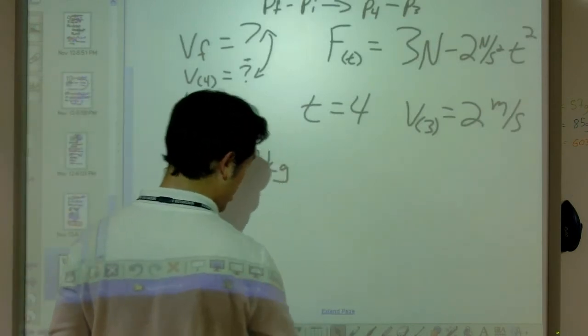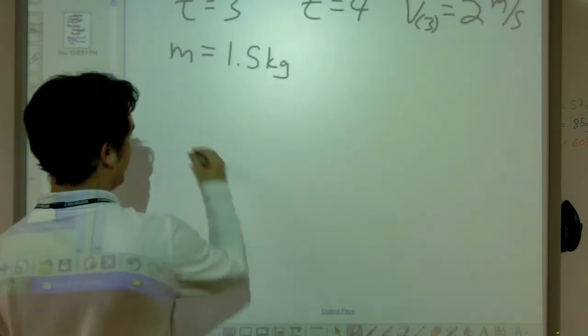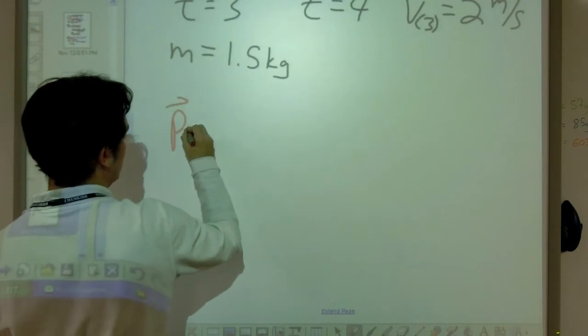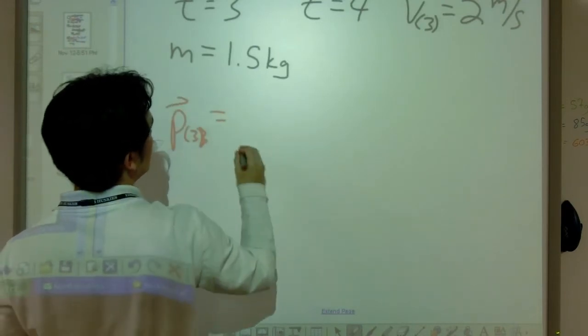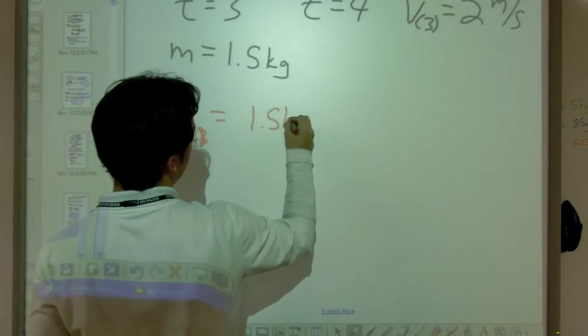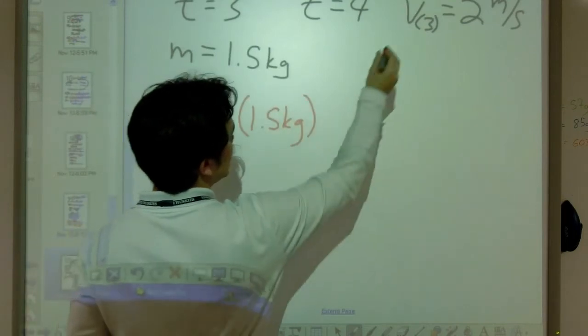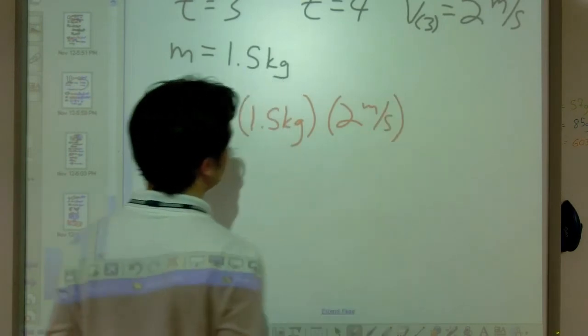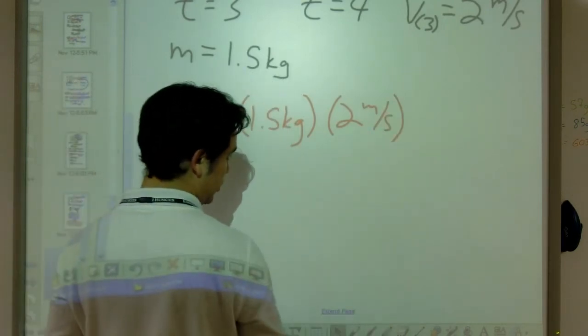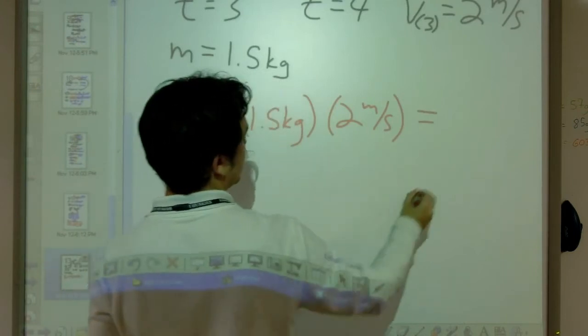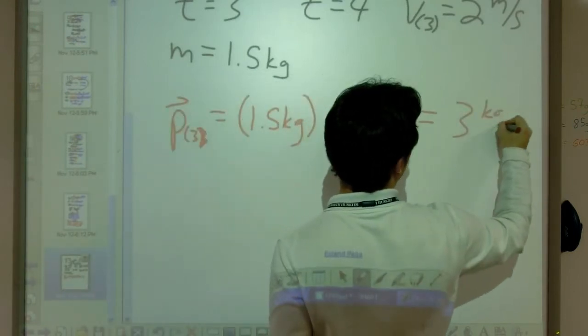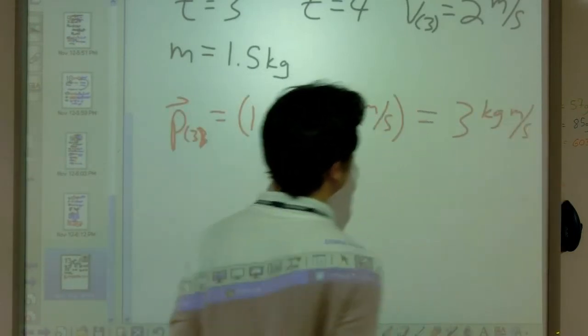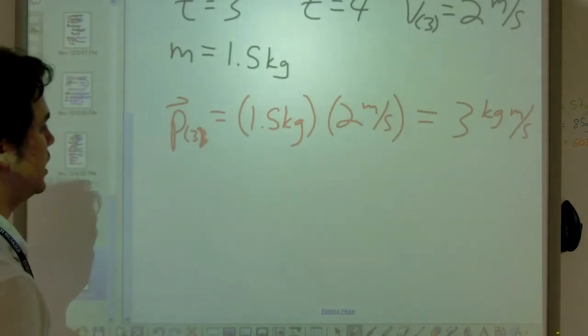So let's start off by finding our momentum at three seconds. So momentum at three seconds is equal to our mass, which is 1.5 kilograms times our velocity at three seconds, which is two meters per second. So we end up with three kilogram meter per second. Awesome, so we've got our initial momentum.